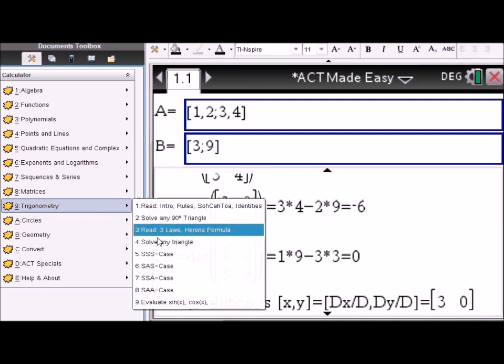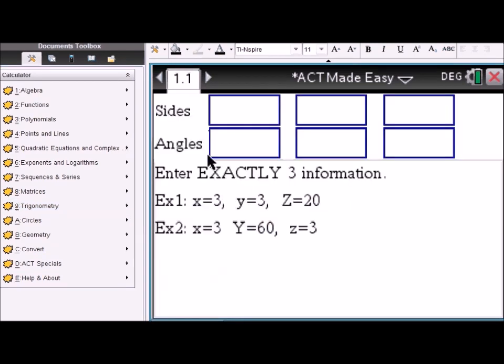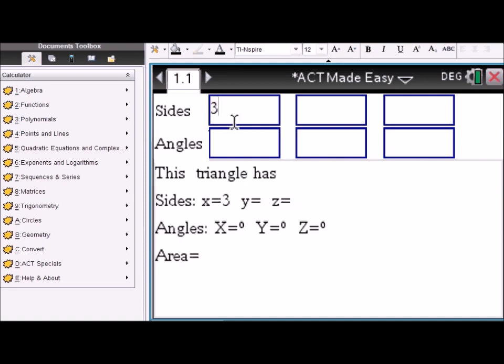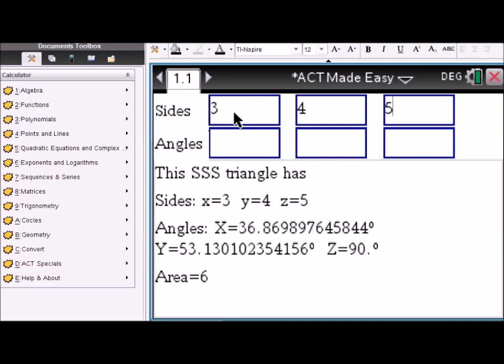Trigonometry. You can solve any triangle. You have to enter exactly three pieces of information. Say you enter 3, 4, 5. That gives you a right triangle, 90 degrees, and the other two angles are 36 and 53. The area of this triangle is 6, because 3 times 4 over 2 is 6.